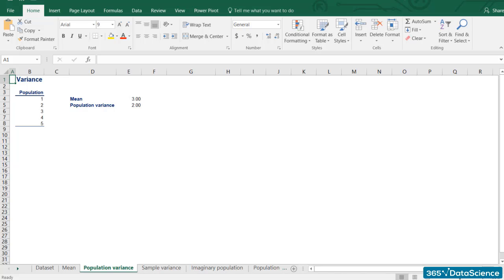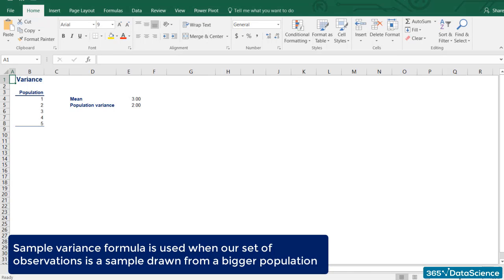But what about the sample variance? This would only be suitable if we were told that these five observations were a sample drawn from a population. So, let's imagine that's the case.